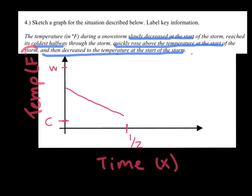And then it says it quickly rose above the temperature of the start. So if the start is here, it's saying it quickly, so a steeper slope rose to be above where that start point was. So it should be a little bit steeper of a slope.